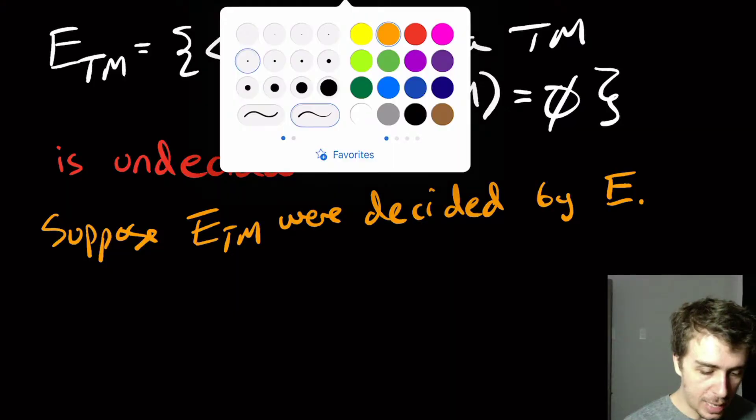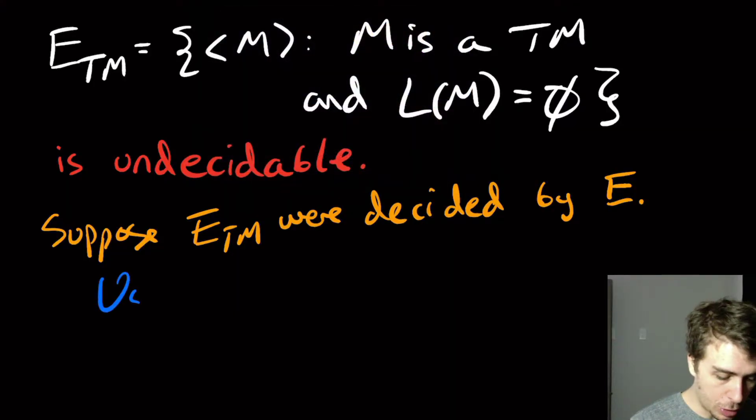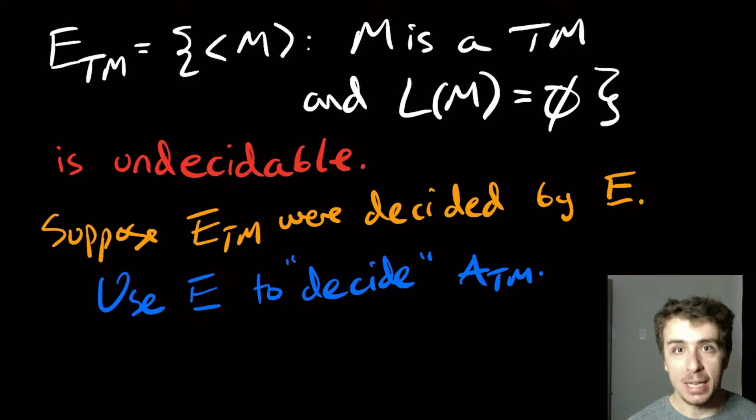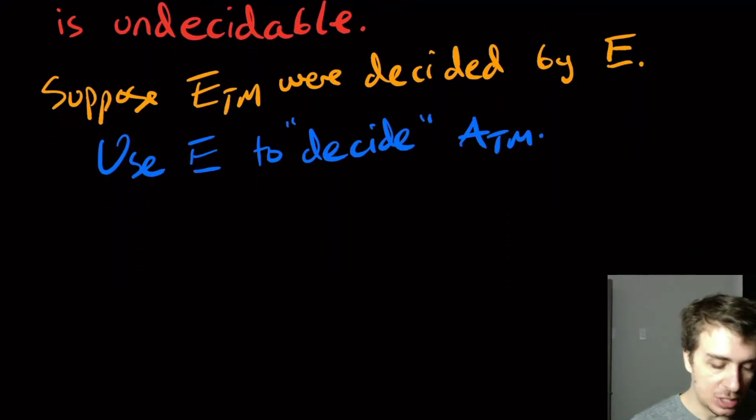And how we're going to do that is we're going to use this machine E to decide, quote unquote, ATM. But we know that ATM cannot possibly be decided because we proved that no decider exists. So we got to use this machine E in some kind of way in order to help us prove that ETM is undecidable.